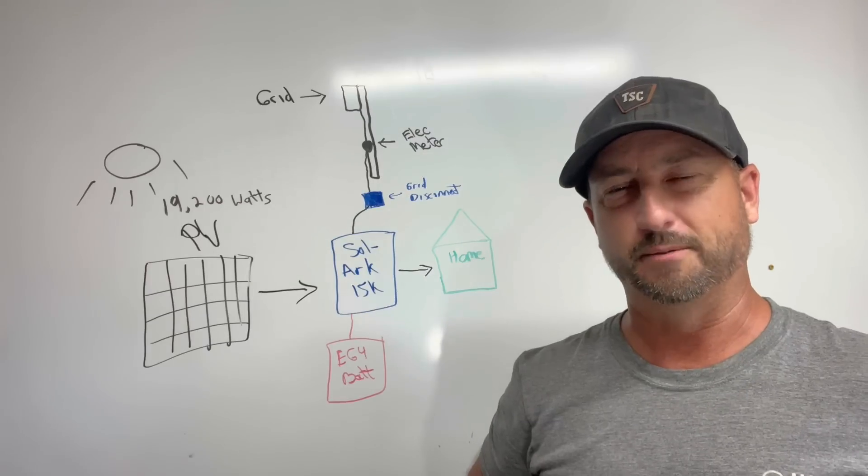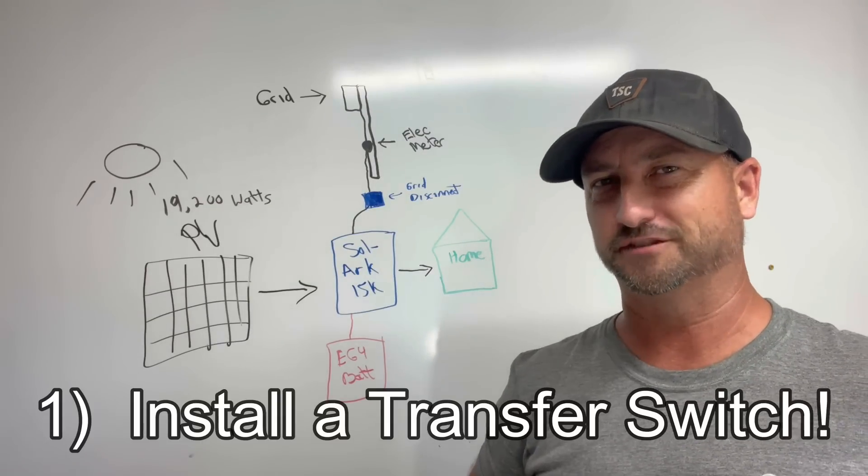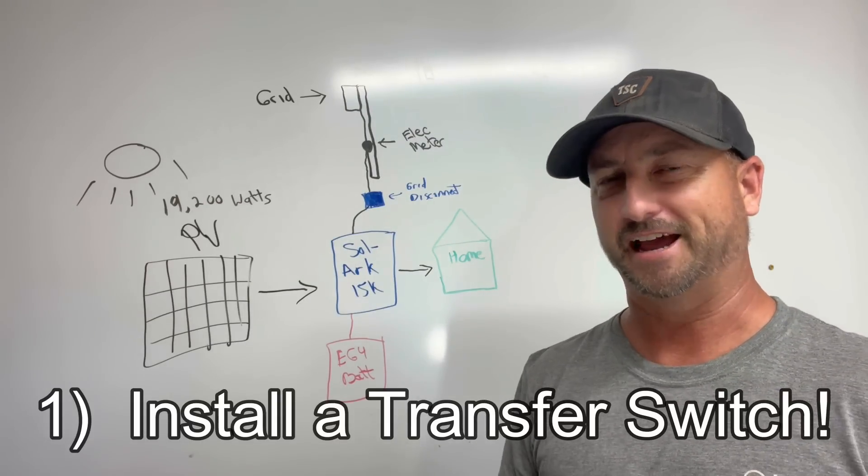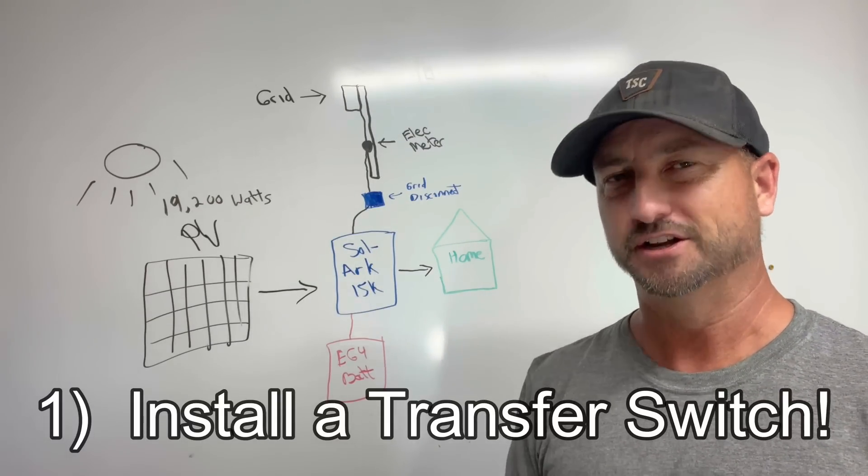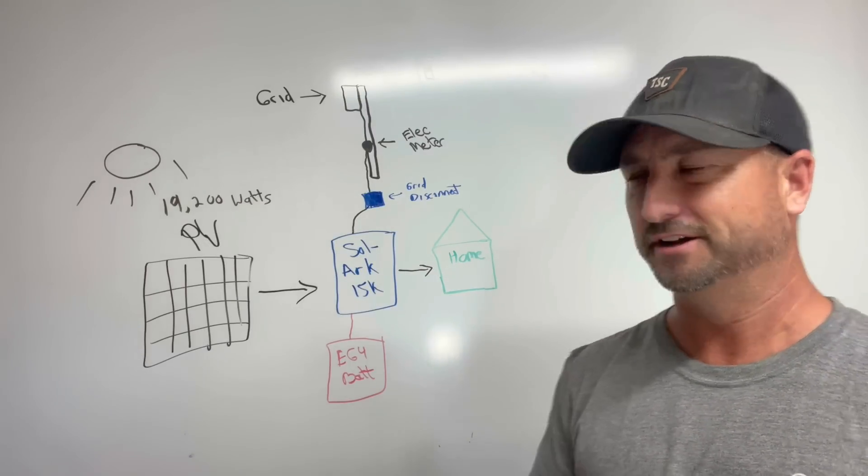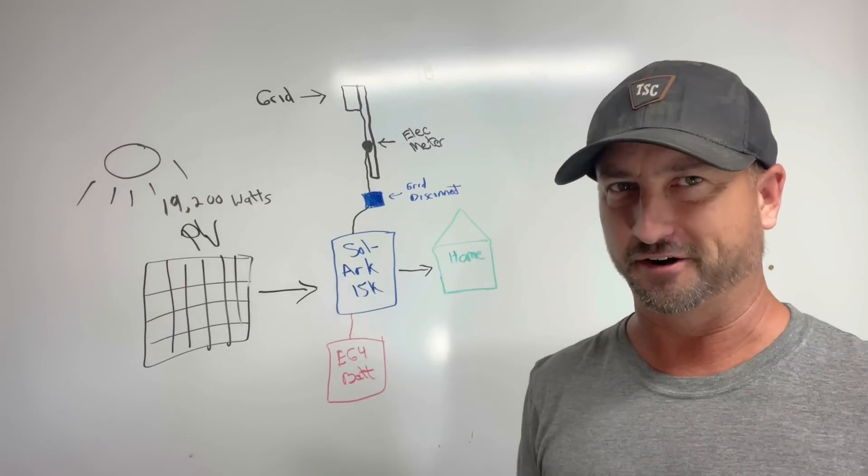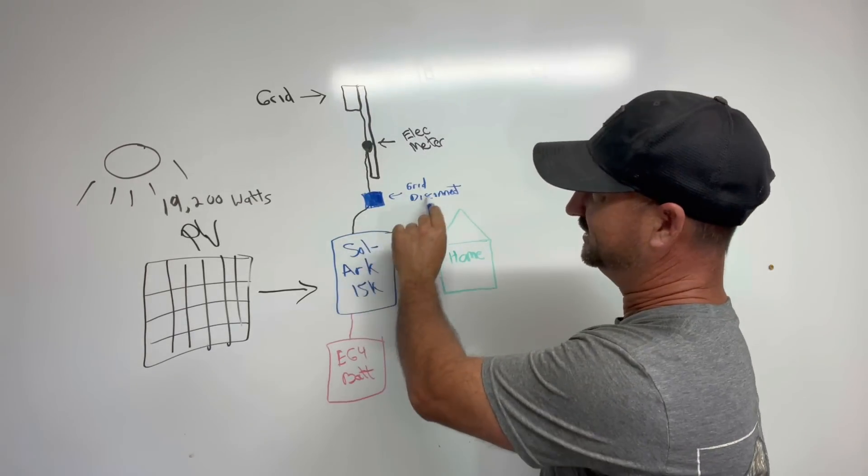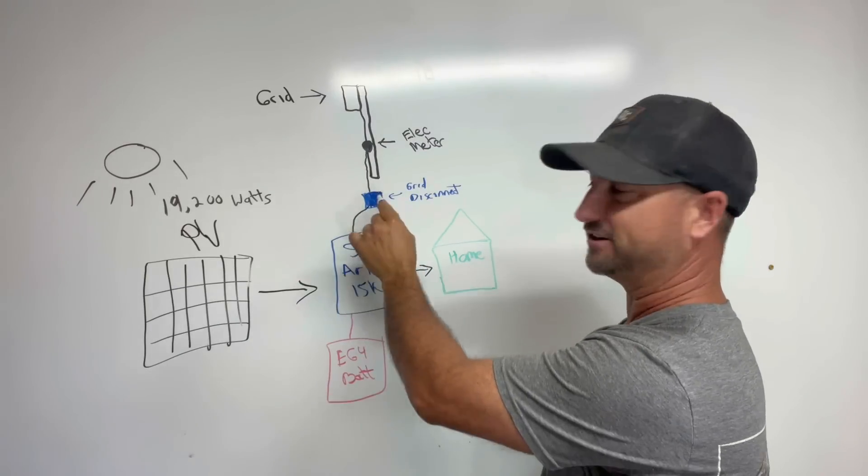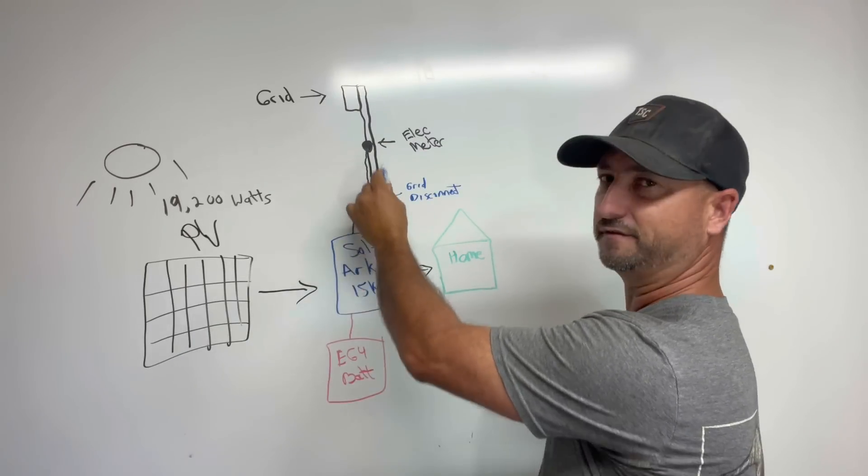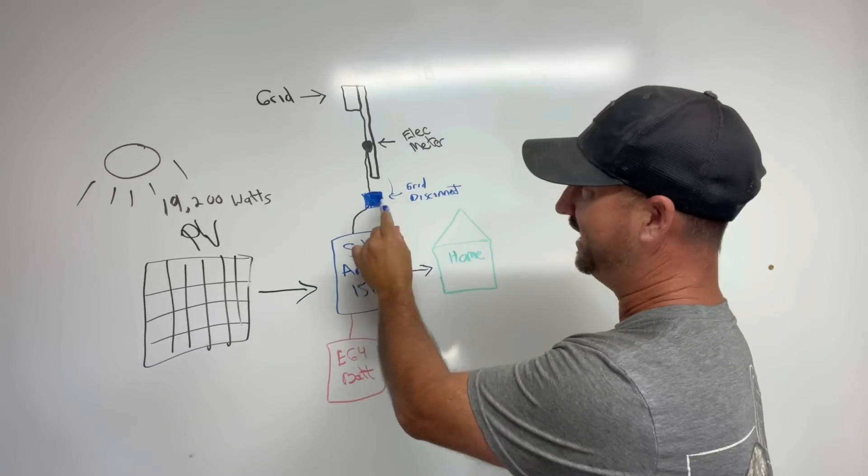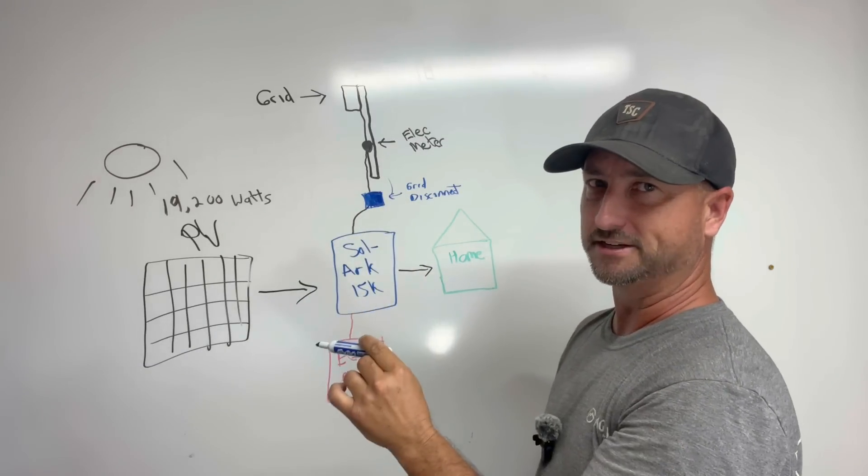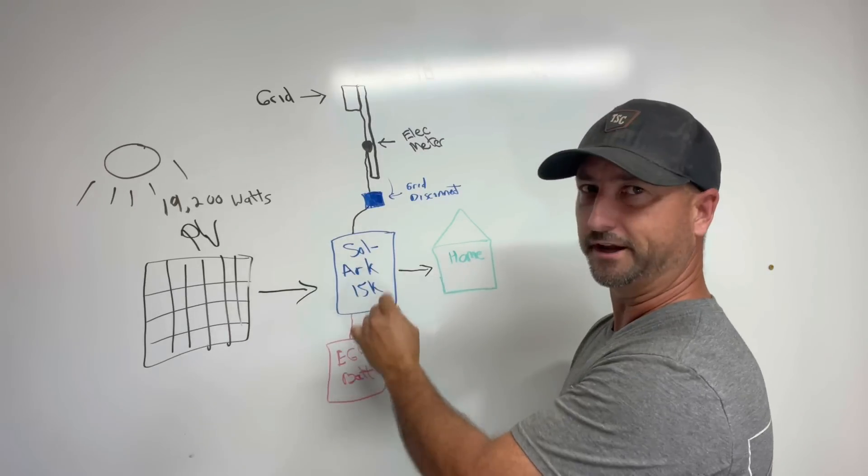So number one, the first thing I would change if I had to do it all over again is add a transfer switch. So right now really all the code requires at least in my area is a disconnect. You can connect your system, disconnect it from the grid so there's no chance of feeding back to the grid. I just put in a disconnect but what that means is when I need to do a firmware update on the Solark, which isn't often, but it is oftentimes I want to add something, test out different products, add more batteries, add more panels.